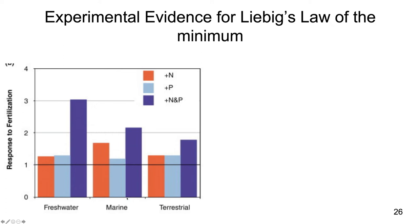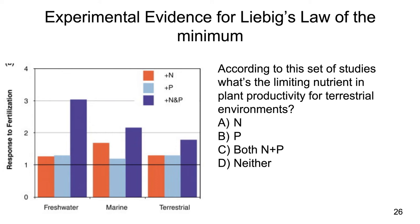Zero represents no addition, so no increase in growth. Given that, what's the limiting nutrient in plant productivity for terrestrial environments? If you said both N and P, you would be correct. When you add nitrogen there's an increase of about 1.2, and if you add phosphorus there's also an increase in growth of about 1.2. But if you add both nitrogen and phosphorus, you get even more growth — so both are limiting factors in this environment.